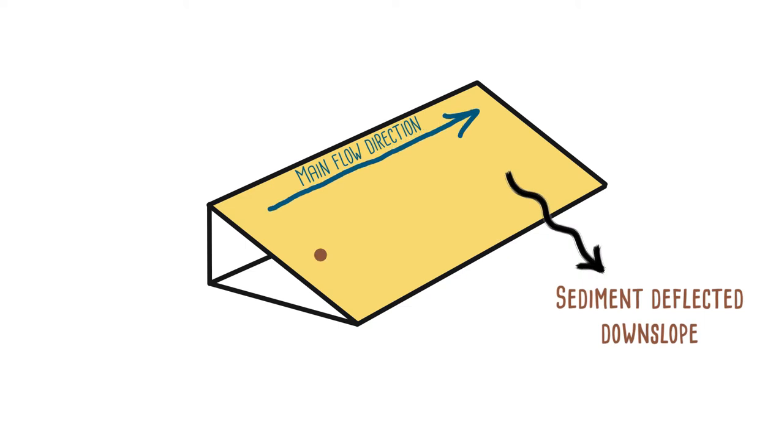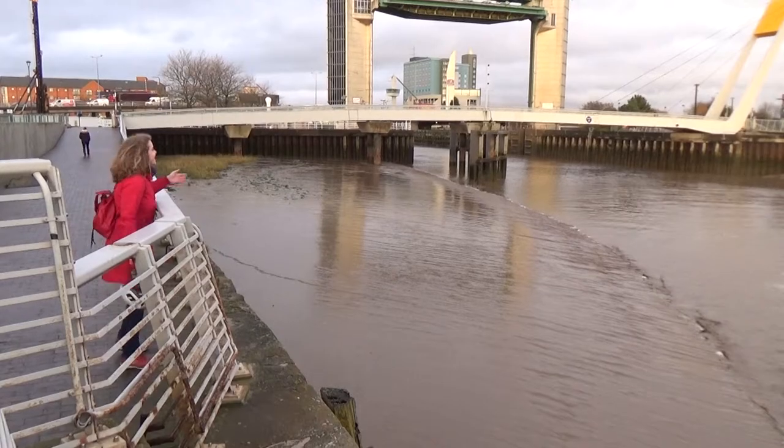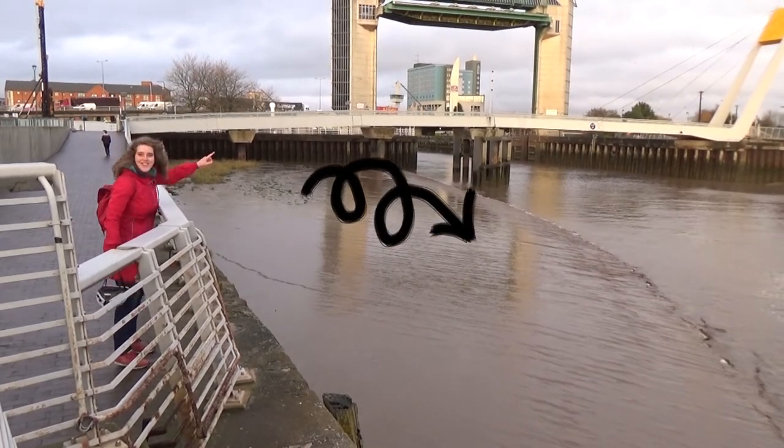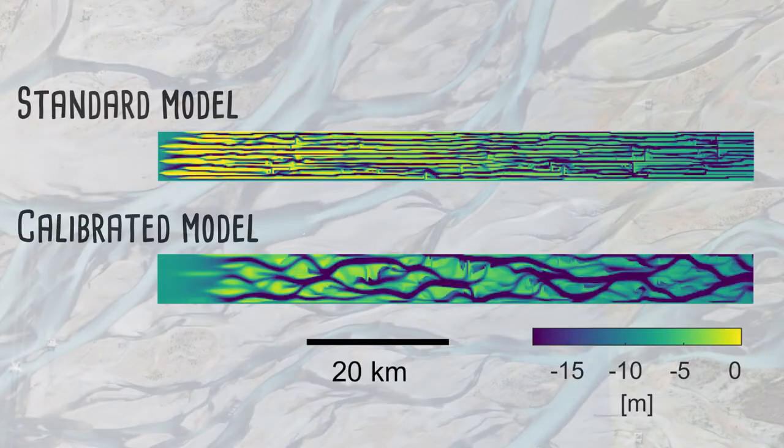The most effective method is to increase the transfer bed slope effect. The transfer bed slope parameter determines the amount of sediment that is deflected downslope on slopes that are transverse to the main flow direction. Therefore, increasing this parameter results in more sediment downslope that counteracts the extreme channel incision in models.